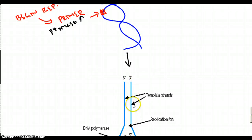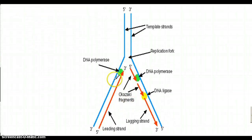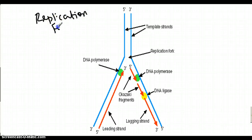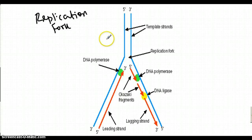This widened-open structure is known as the replication fork. It's called this because of its structure — we're going down and then widening up, and it kind of looks like a fork. So they called it the replication fork because it's starting the replication and it looks like a fork.